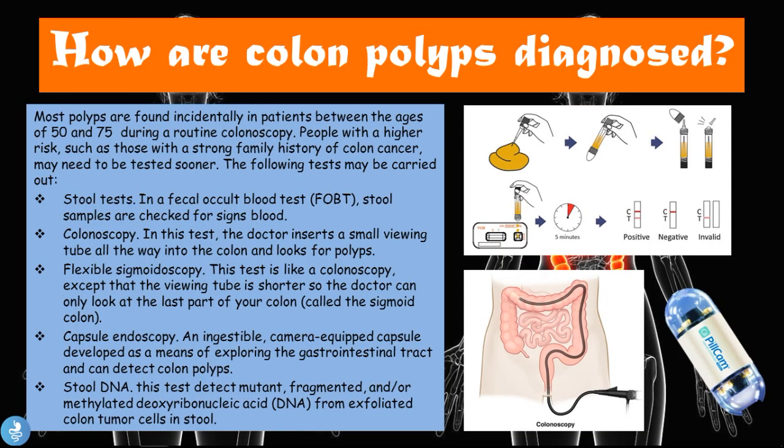How can we diagnose colon polyps? Most polyps are found incidentally in patients between the ages of 50 and 75 during a routine colonoscopy. Usually after the age of 50, most patients are screened actively about every 5 to 10 years for colon cancer, and this is when most polyps are actually diagnosed. People with a higher risk, such as those with a strong family history of colon cancer, may need to be tested sooner.